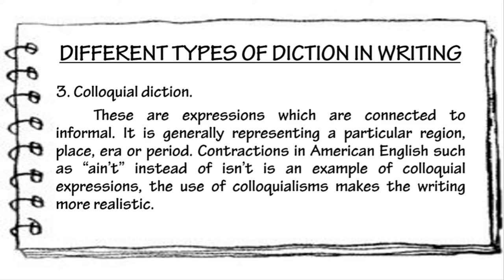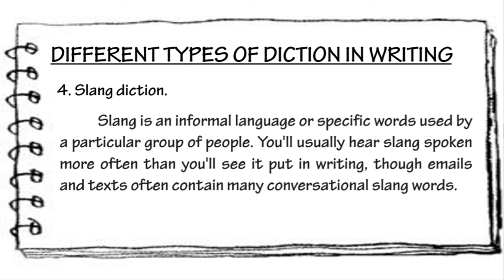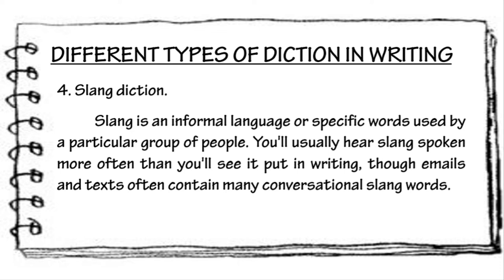The fourth type of diction is slang diction. Slang is an informal language or specific words used by a particular group of people. You'll usually hear slang spoken more often than you see it put in writing, though emails and texts often contain many conversational slang words. In slang diction, these are words used today and spoken out loud by friends or close associates. Examples of these words are dope, lit, and canceled.